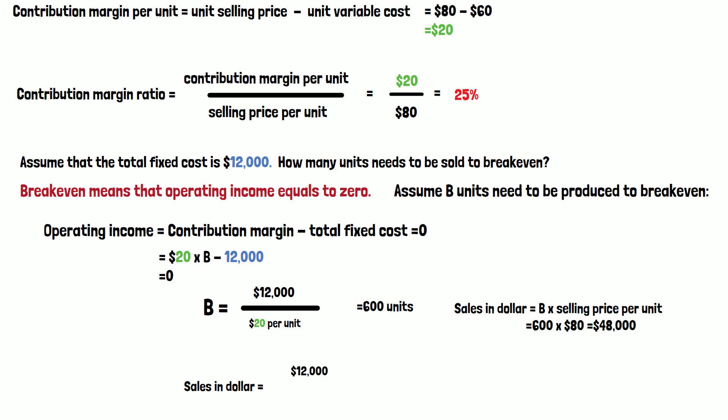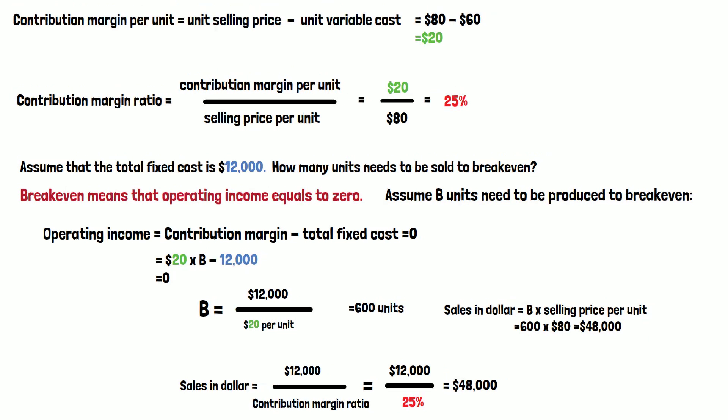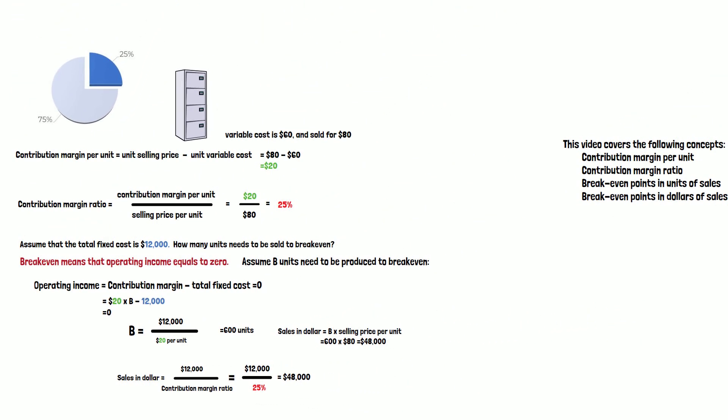There's a different way to calculate the dollars of sales to break-even. We are using the total fixed cost, $12,000, divided by contribution margin ratio, which we have calculated to be 25%. So in the calculation, $12,000 divided by 25%, we get $48,000, exactly the same number as we calculated. Thank you.